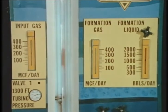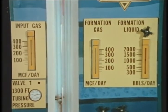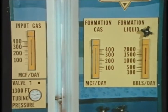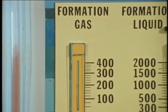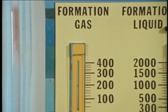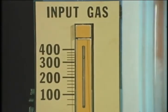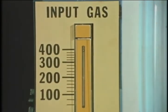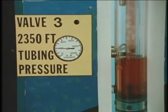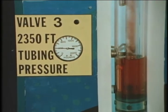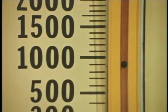As formation gas decreases to zero, liquid production can be maintained by gas from the gas lift valves only. To illustrate, we will close off formation gas and reset the adjustable needle valve on the input gas line to 400 mcf per day. Now all the gas is being injected through the gas lift valve at 2,350 feet and production is 900 barrels per day.